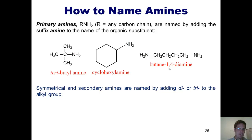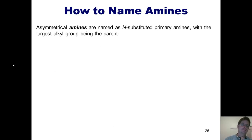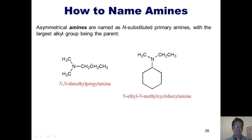Symmetrical secondary and tertiary amines are named by adding di- or tri- to the alkyl group name: a nitrogen with two ethyl groups is diethylamine, and with three ethyl groups it's triethylamine. Asymmetrical amines are named as N-substituted primary amines, with the largest alkyl group as the parent. For example, a nitrogen attached to two methyls and a propyl group: the propyl is the longest chain, so it's propylamine, and the two methyl substituents on the nitrogen are indicated as N,N-dimethylpropylamine.